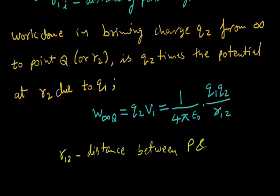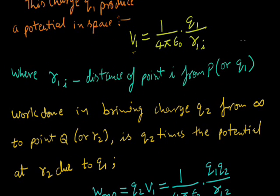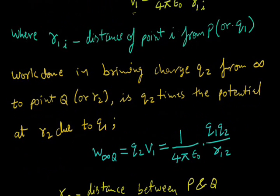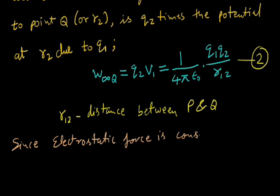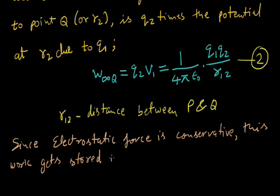You know what is V1 from equation 1, we are putting the value and we are getting equation 2. Since electrostatic force is conservative, this work gets stored in the form of potential energy of the system.